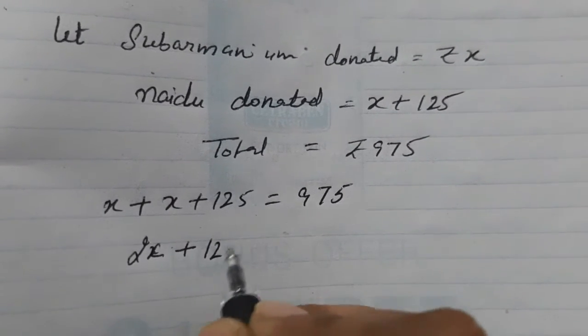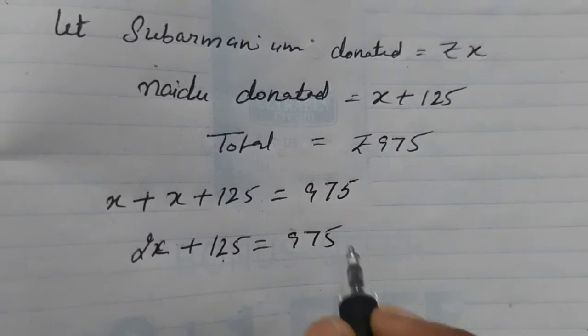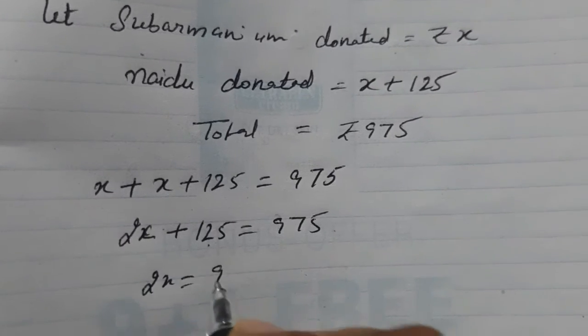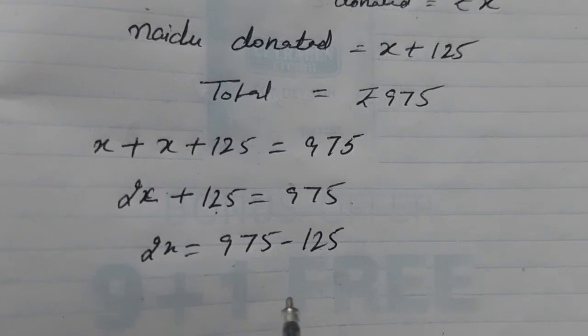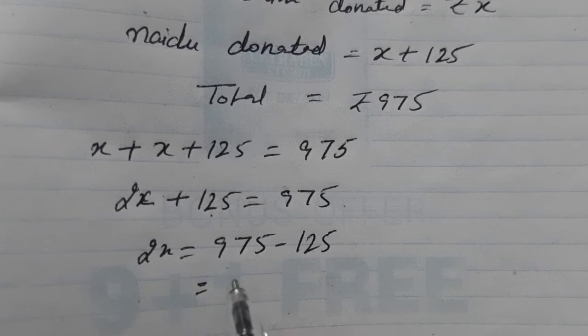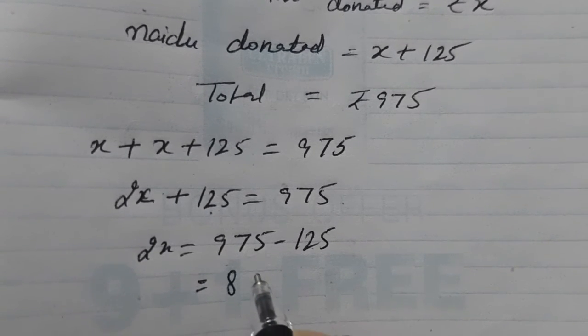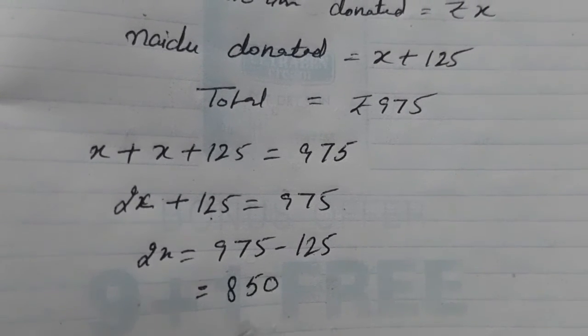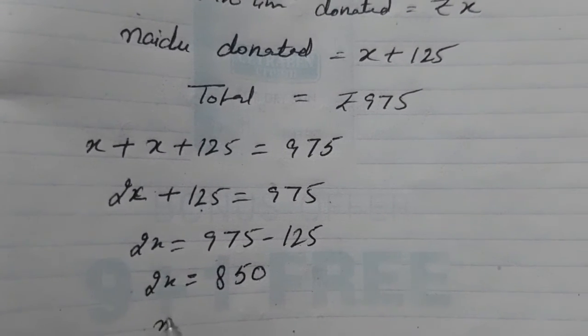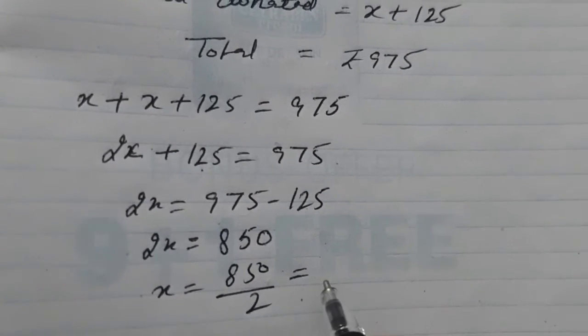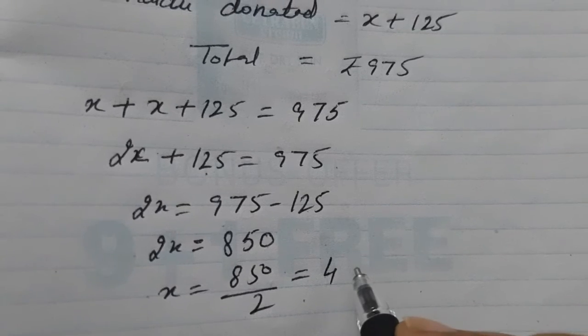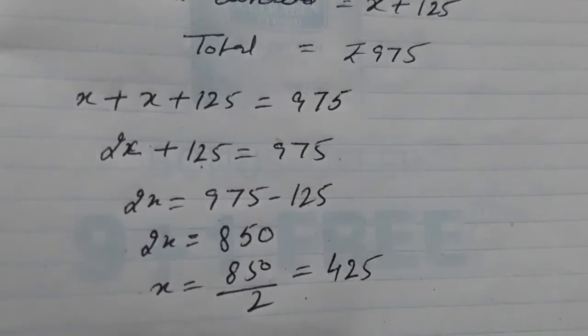2X plus 125 is 975. We will transpose 125 to right side. It will become minus 125. And, after subtraction, we will get here Rs. 850. And, X will be Rs. 850 by 2. We will divide it by 2. And, we get here Rs. 425.